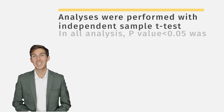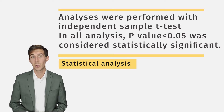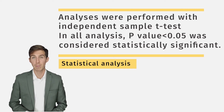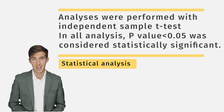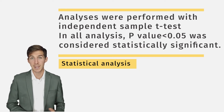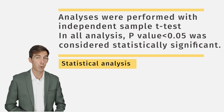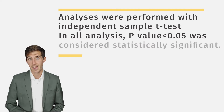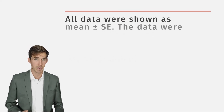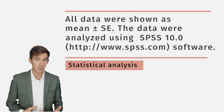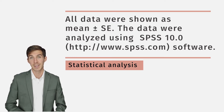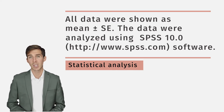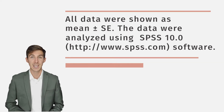Let's talk about the statistical analysis and tools used. In our case, we used an independent sample t-test, which compares the means of two groups — in our case, the vitamin D group and the placebo group. We also specify the definition of statistical significance: if the p-value is less than 0.05, the difference will be considered statistically significant. We also specify the data format: all data will be represented as mean plus or minus standard error.